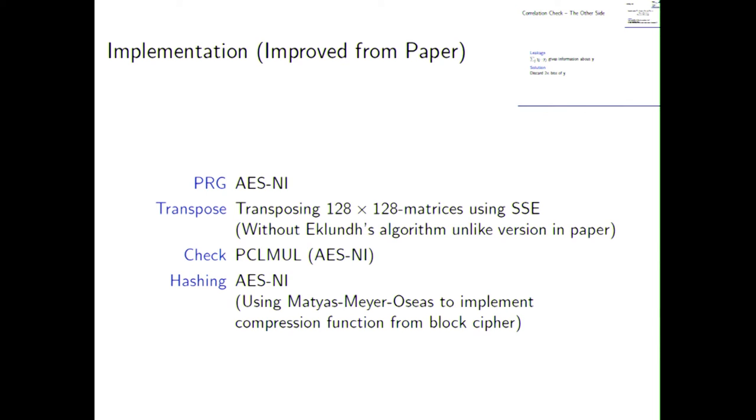So, so much about the theory, a few words about the implementation, and note well that there's some improvements from the paper in here that we made after the camera-ready version was due. So, as you can see, we love CPU extensions, especially the cryptographer's delight, AES-NI. We use it for the PRG and for hashing, and, of course, also for our correlation check, which involves operations in extension fields of characteristic two. Of course, PCLMUL is the CPU instruction of our choice. Also, a brief word about the transpose step. Previous implementations of OT extensions have noted that they needed Eklund's algorithm. We found that this is not really necessary.